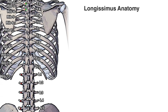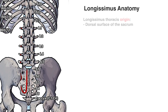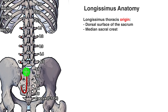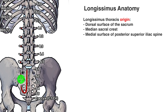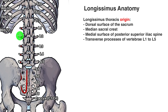The longissimus thoracis is originating on the dorsal surface of the sacrum — essentially the back of the sacrum. Additionally, it's also originating from the median sacral crest, which is this bony ridge right here. It's also originating on the medial surface of the posterior superior iliac spine, and on the transverse processes of vertebrae L1, L2, L3, L4, and L5. The transverse processes are these bony projections coming off each side of the vertebrae.